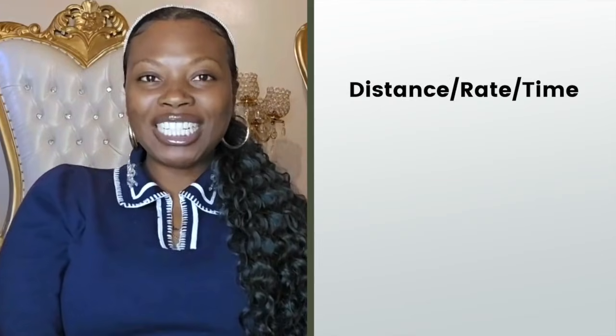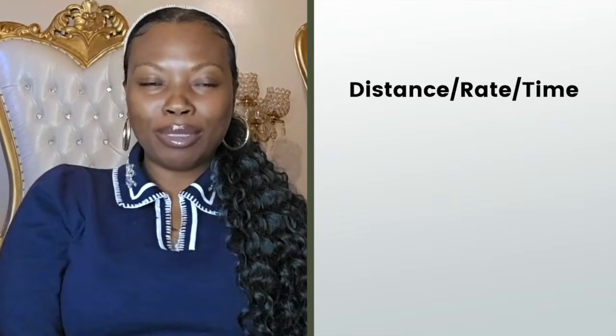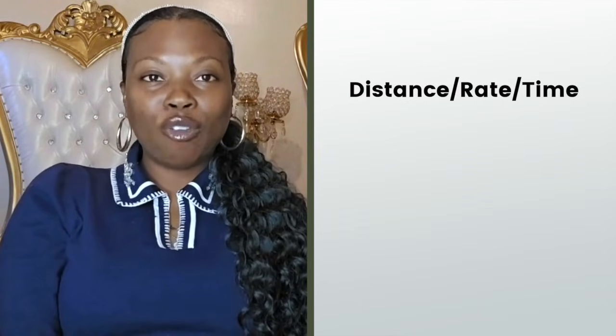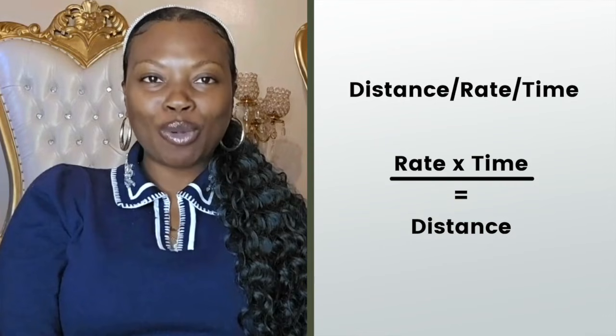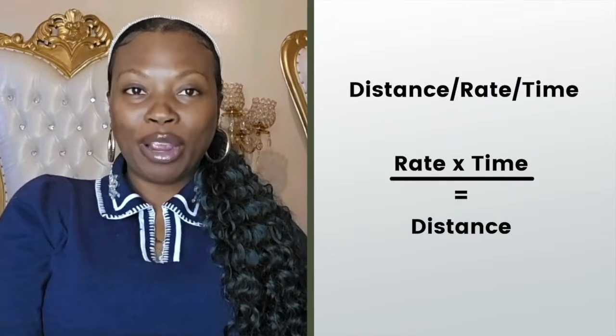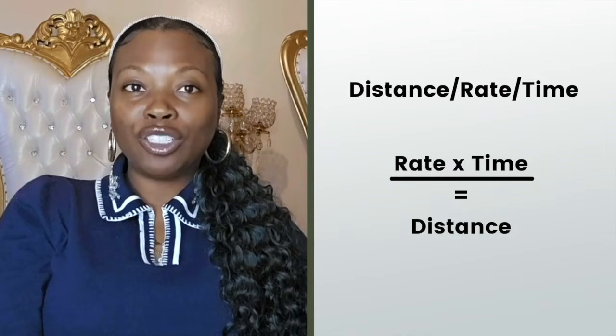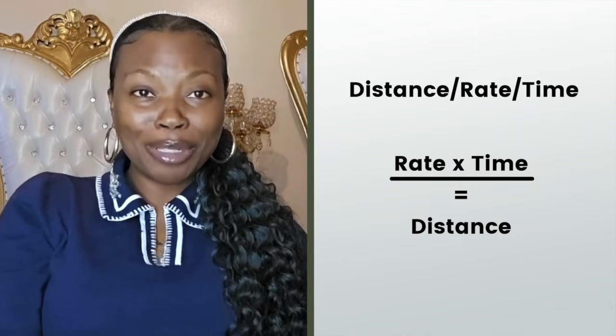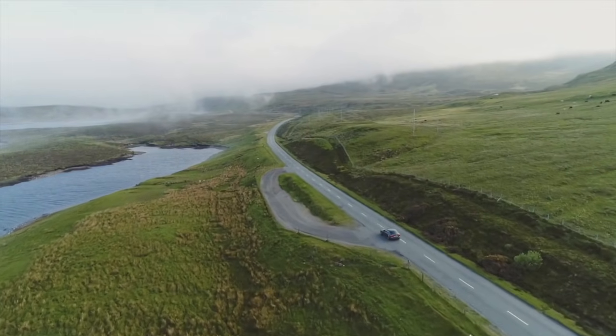First up is distance, rate, and time problems. I know a lot of people hate these, but let me break it down. The magic formula is distance equals rate multiplied by time. Here's the trick to remembering it: distance is the end of your journey, just like it's the end of the formula. To get there, you multiply rate and time because multiplying gets you there the fastest. Here's an example of finding the distance.